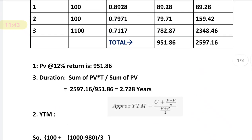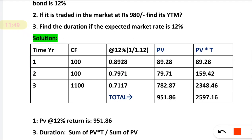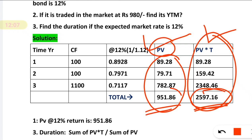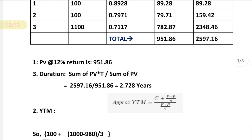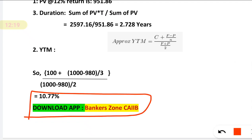So most importantly in the CIB exam, remember how to calculate the present value — you will definitely get a question on present value as well as duration. Duration: first find present value, then find Σ(PV × t) divided by Σ(PV) to get the duration. Hope you liked this video — share it with your friends so they benefit. You can also download the application from the Play Store: Banker's Zone CIB. All the best.